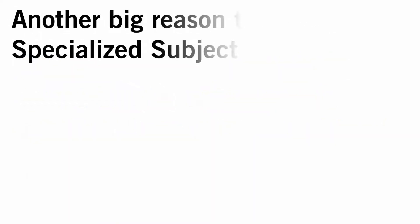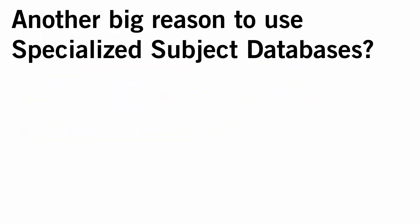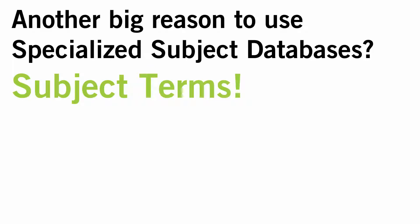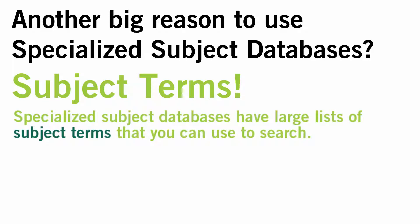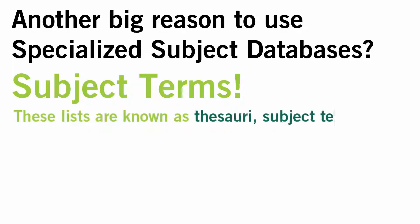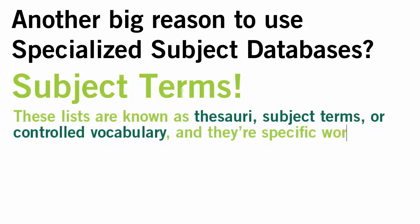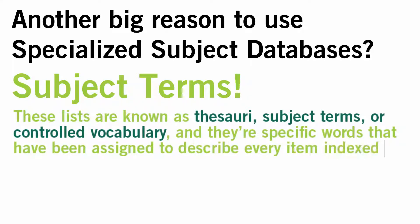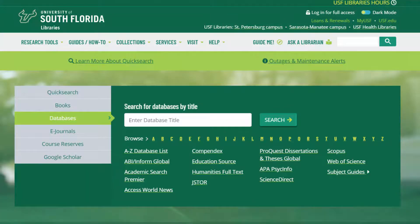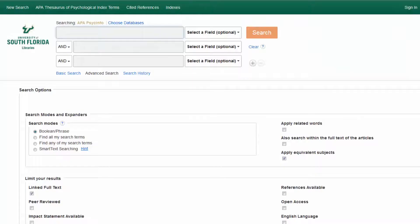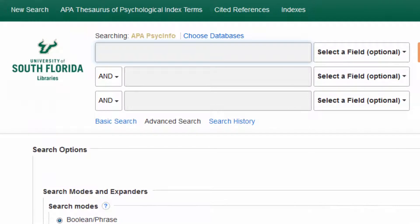There's another big reason to consider using specialized or subject-specific databases over a federated search tool like QuickSearch. Specialized subject-specific databases like PsycInfo, PubMed, and ERIC have large lists of subject terms that you can use to search. These lists are known as thesauri, subject terms, or controlled vocabulary — specific words that have been assigned to describe every item indexed in a particular database. They allow you to find the subject terms which best match your research topic.